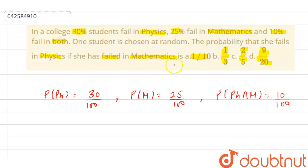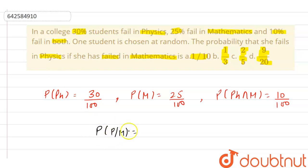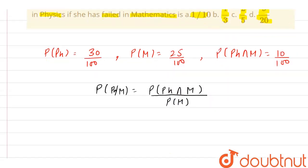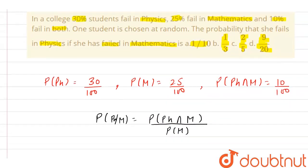By reading the question we can say that this is a conditional probability problem, because we are given that she had failed in mathematics and we have to find the probability that she fails in physics. This means we have to find P(physics | mathematics). We know that P(P|M) equals the probability of failing in both physics and mathematics — that is P(physics ∩ mathematics) — divided by the probability of failing in mathematics, P(M).